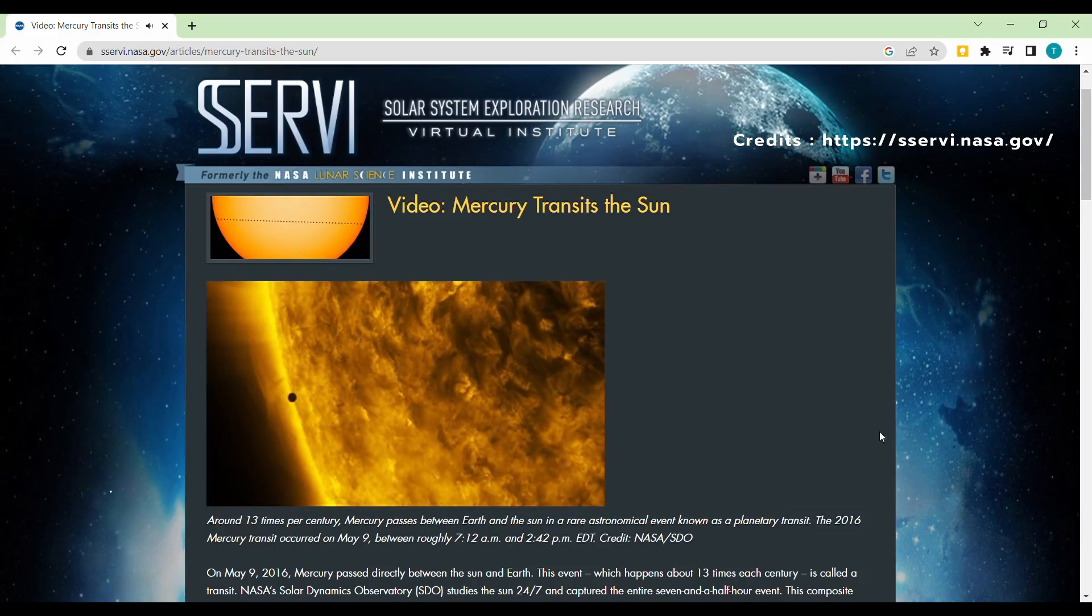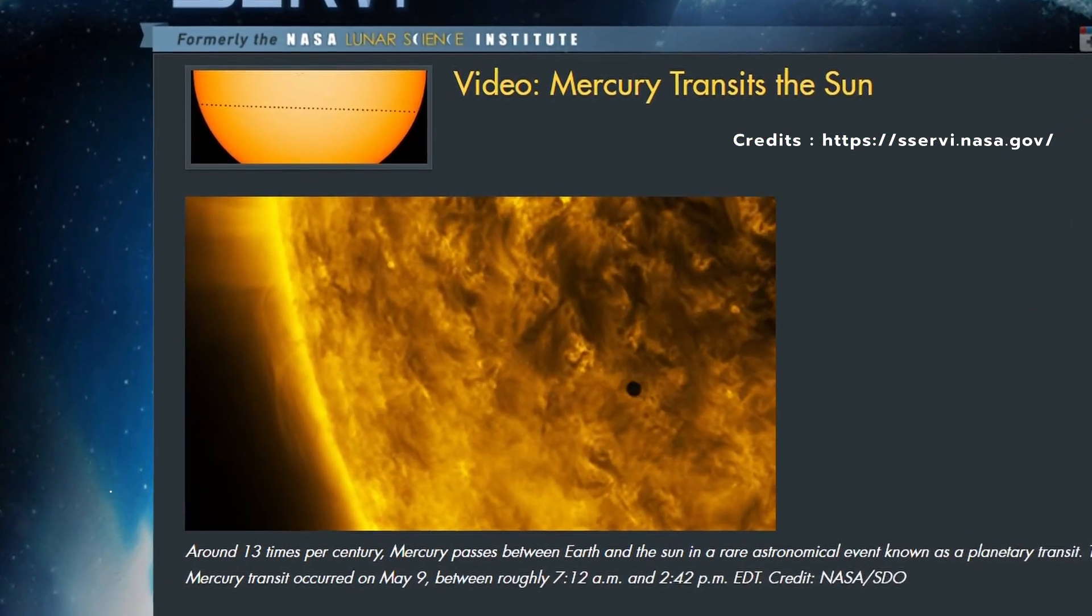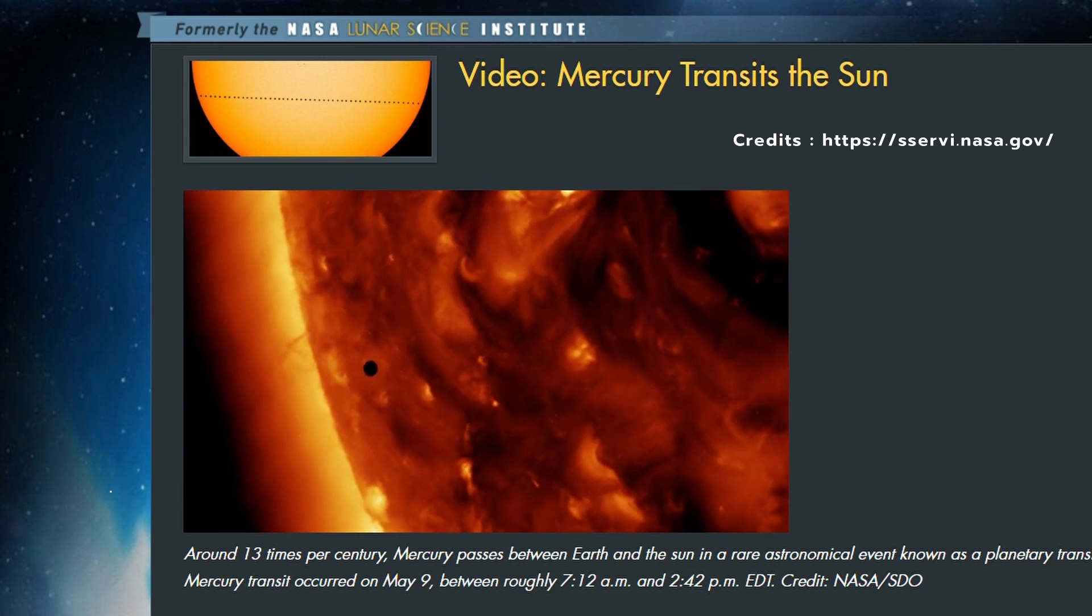As can be seen here, during a transit, Mercury appears as a teeny black dot moving across the Sun.